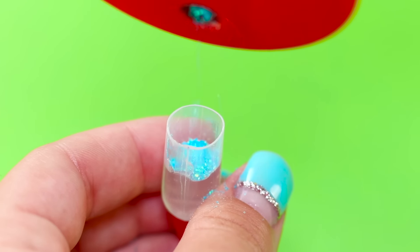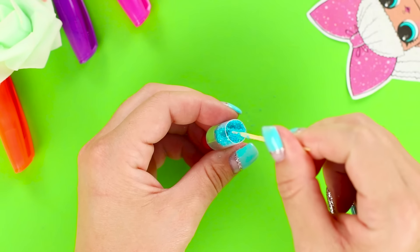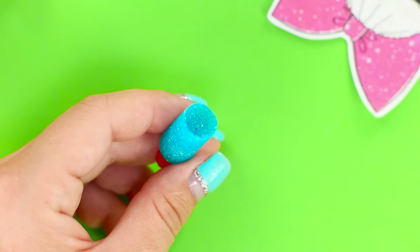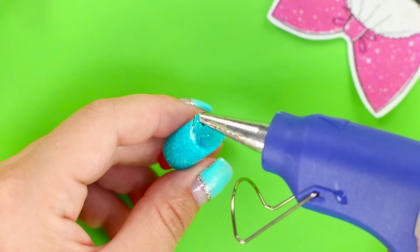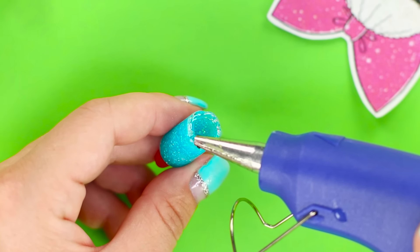Add glitter and mix well. As soon as the glue turns into a smooth, shiny mass, seal the cup with hot glue.